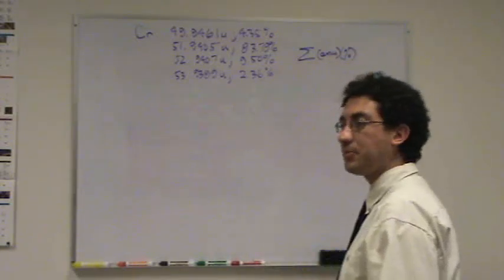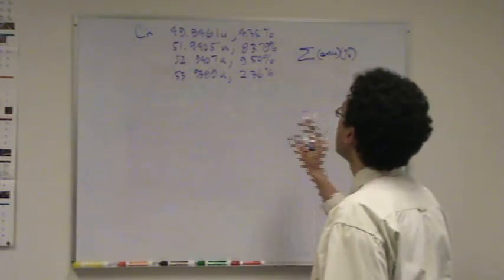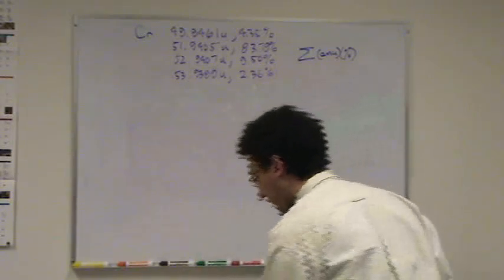When you add all those up, this is called a weighted average. When you add all those up, you should get the final answer.